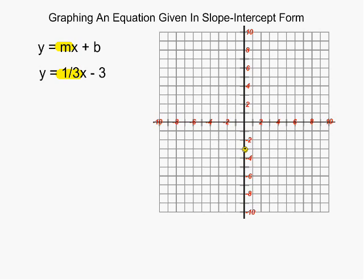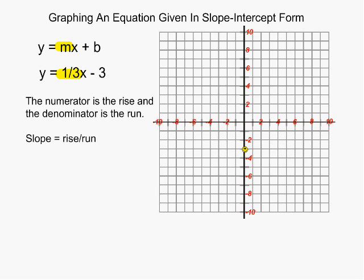Now this simply means the rise over the run. Because our slope is positive, our slope is going to be going upwards and the rise is going to be positive 1. And after we go up positive 1, we are going to go over to the right 3.